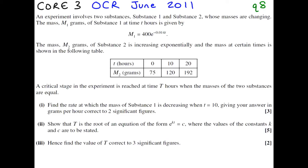The mass m1 of substance 1 at time t hours is given by m1 equals 400 e to the minus 0.014t. The mass m2 of substance 2 is increasing exponentially.